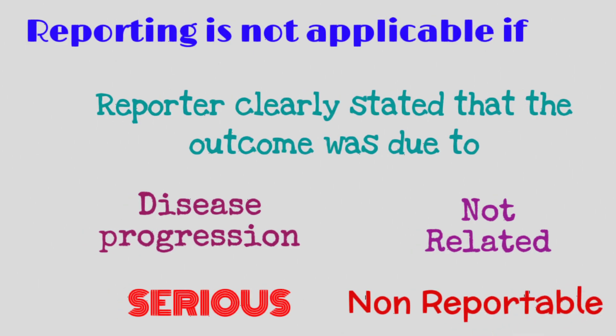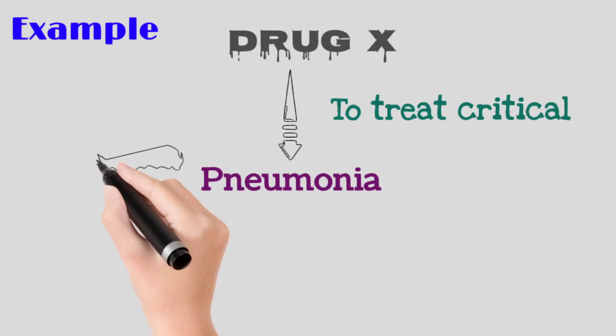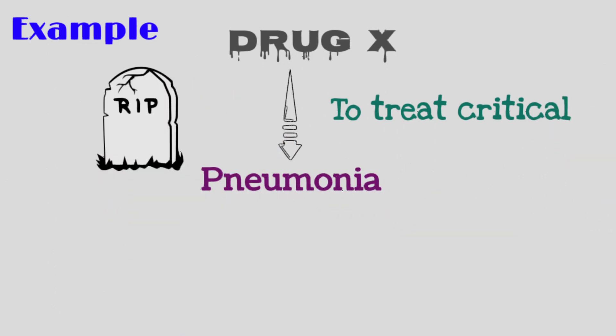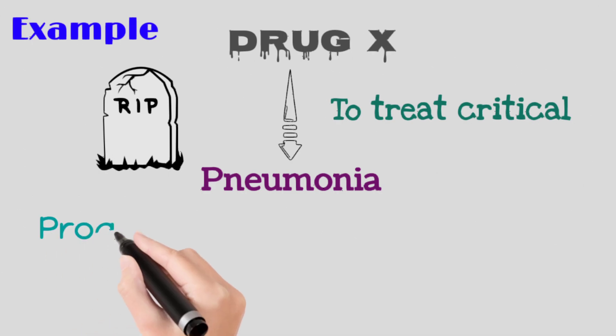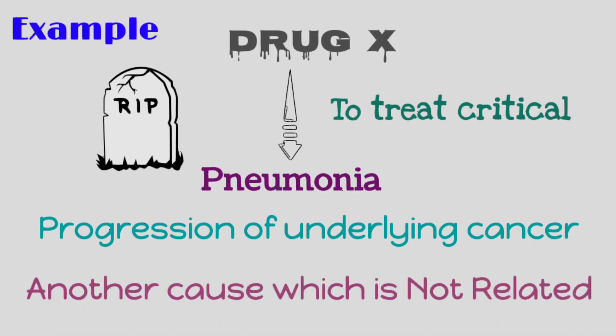Let's take one example to understand this concept in detail. If a patient received drug X to treat the critical condition pneumonia and after taking the drug the patient died, we can report this case to the regulatory authority. But if the reporter clearly stated that the patient died due to the progression of underlying cancer, such a lack of efficacy report is treated as not reportable. Or if the reporter clearly stated that the patient died due to another cause not related to drug X, in that case as well, such a lack of efficacy report is treated as not reportable to the regulatory authority.